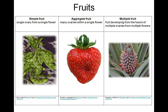Aggregate fruits develop from many ovaries within a single flower. Strawberries are examples of aggregate fruits — many ovaries develop on a common receptacle. The ripened receptacle is actually the red, fleshy, sweet tissue of the strawberry, and the tiny brown spots are actually the dried carpels with the seeds housed within.